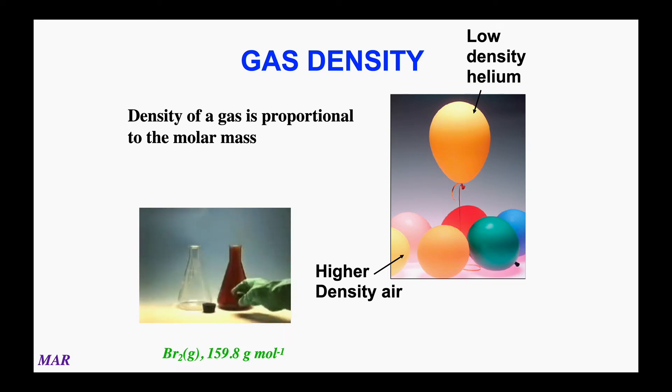Bromine vapor is roughly five times more dense than air. It can be poured from one flask to another. The density of bromine, like that of all gases, is directly proportional to the molecular mass of its molecules in the gas phase.